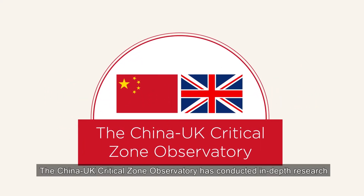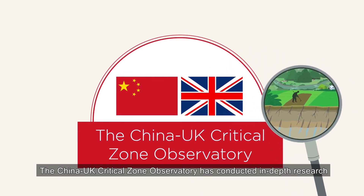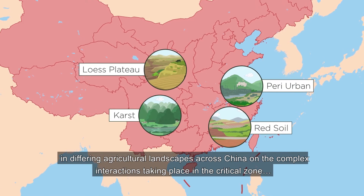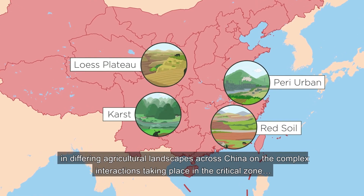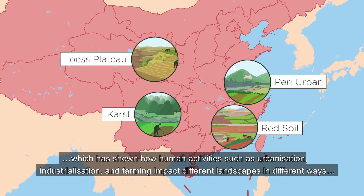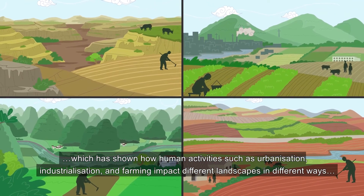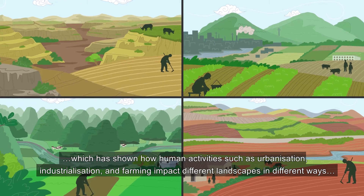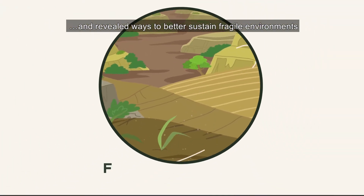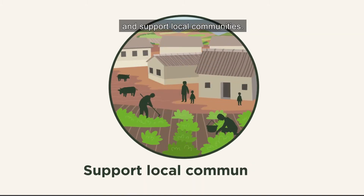The China-UK Critical Zone Observatory has conducted in-depth research in differing agricultural landscapes across China on the complex interactions taking place in the critical zone, which has shown how human activities such as urbanisation, industrialisation and farming impact different landscapes in different ways, and revealed ways to better sustain fragile environment areas and support local communities.